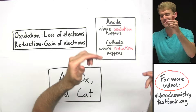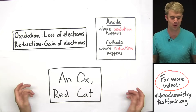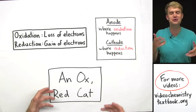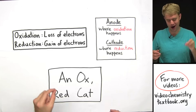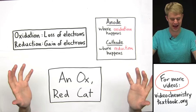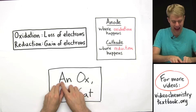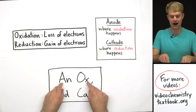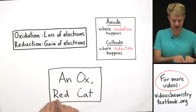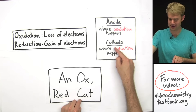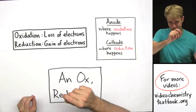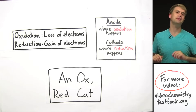So anode and cathode — how are you going to remember them? Here's a really easy mnemonic. Think about two animals: an ox, red cat. An ox stands for 'anode is the site of oxidation.' Red cat stands for 'reduction happens at the cathode.' An ox, red cat — learn it right at the top of your tests and you'll never mix these things up again.